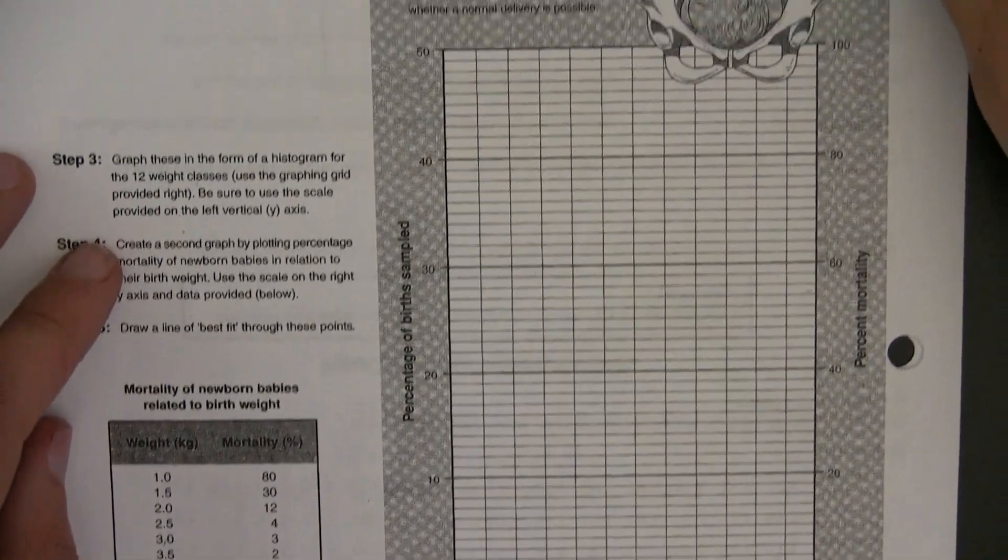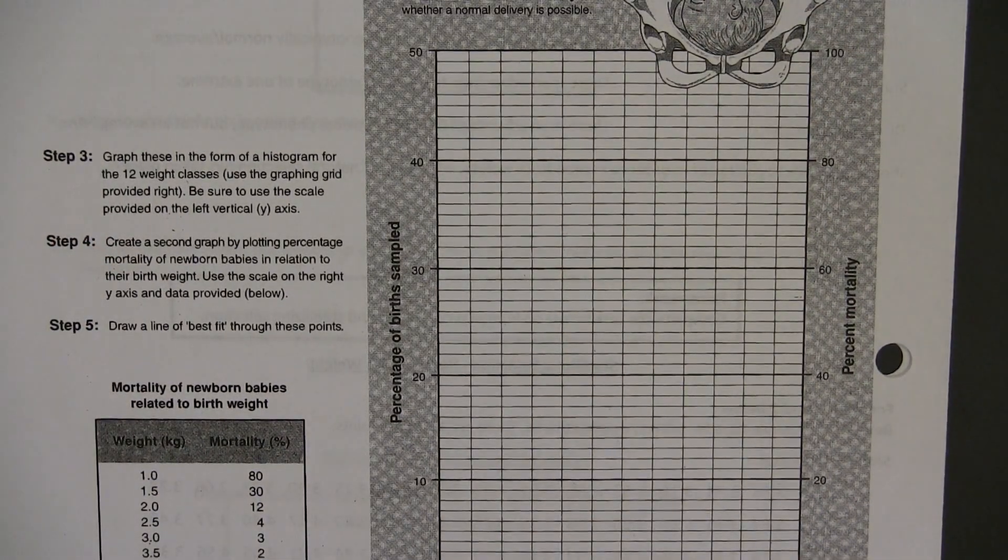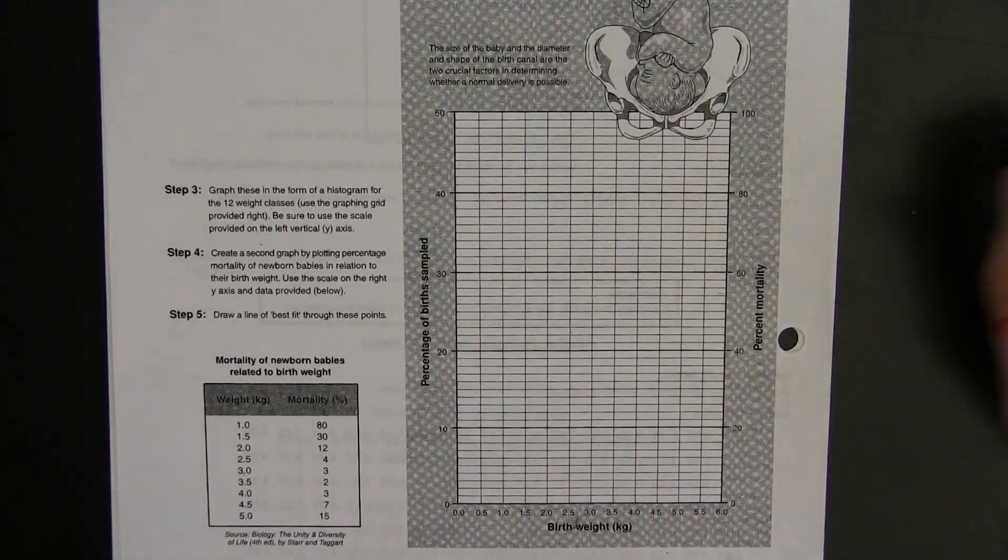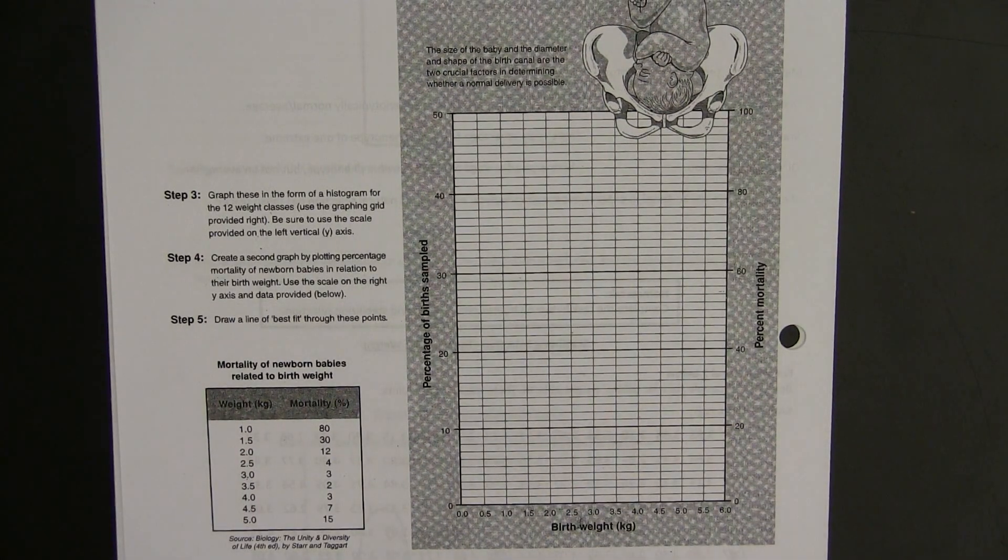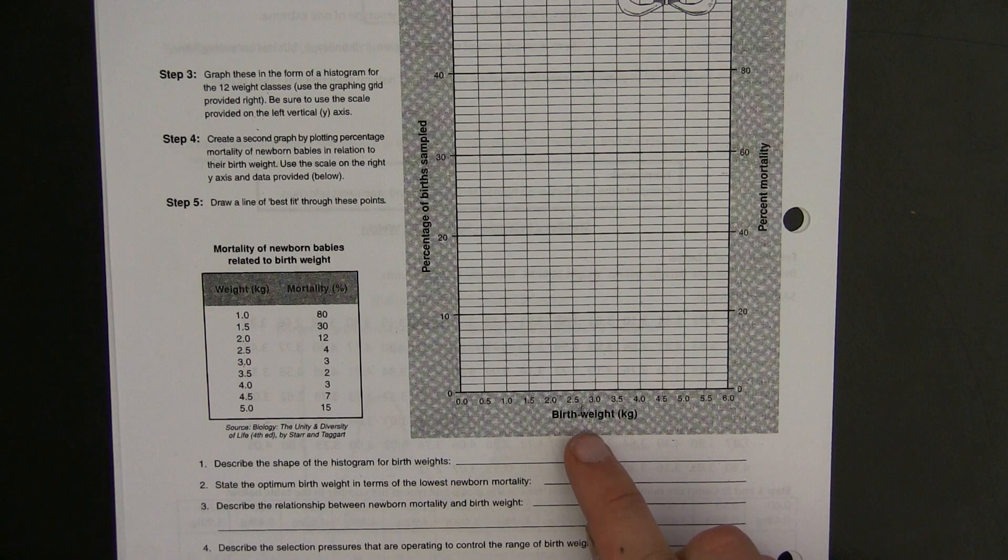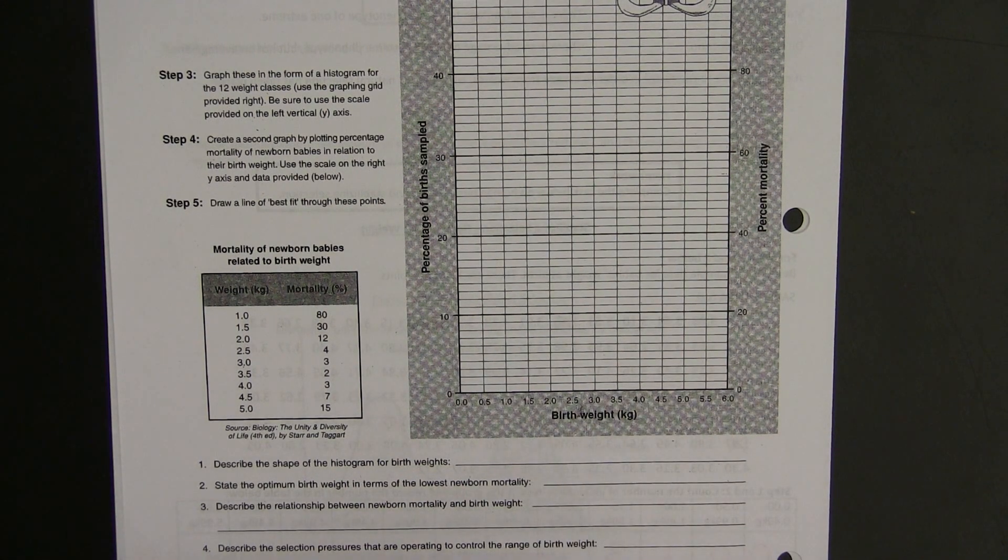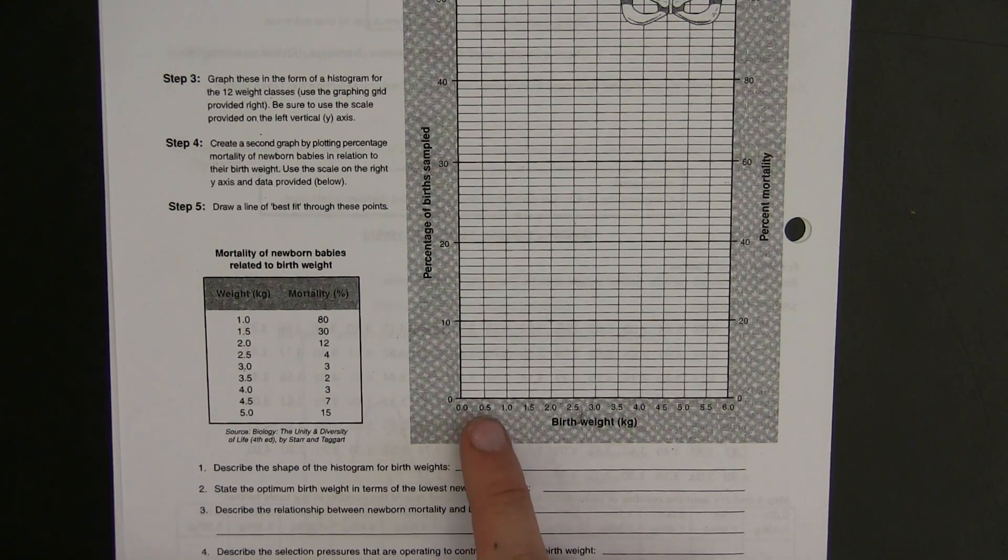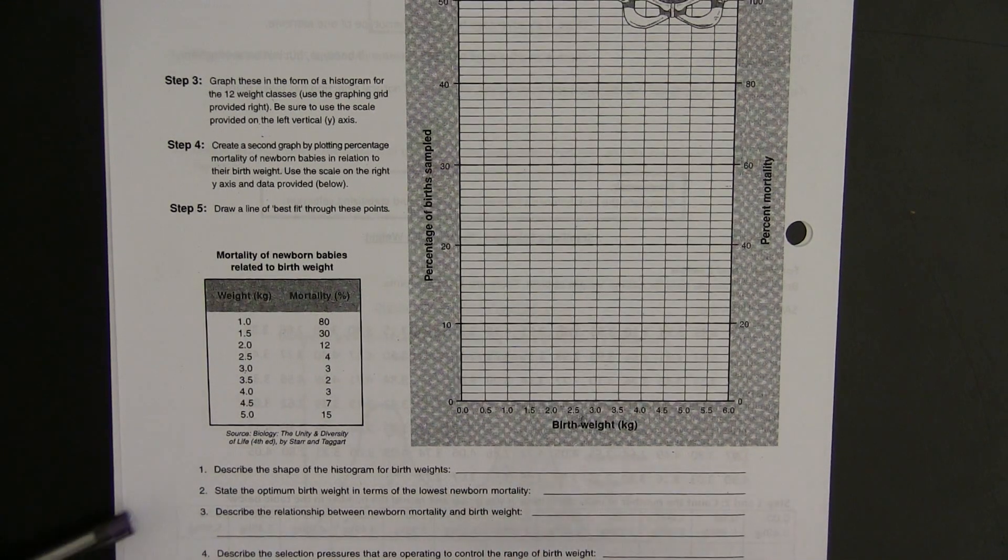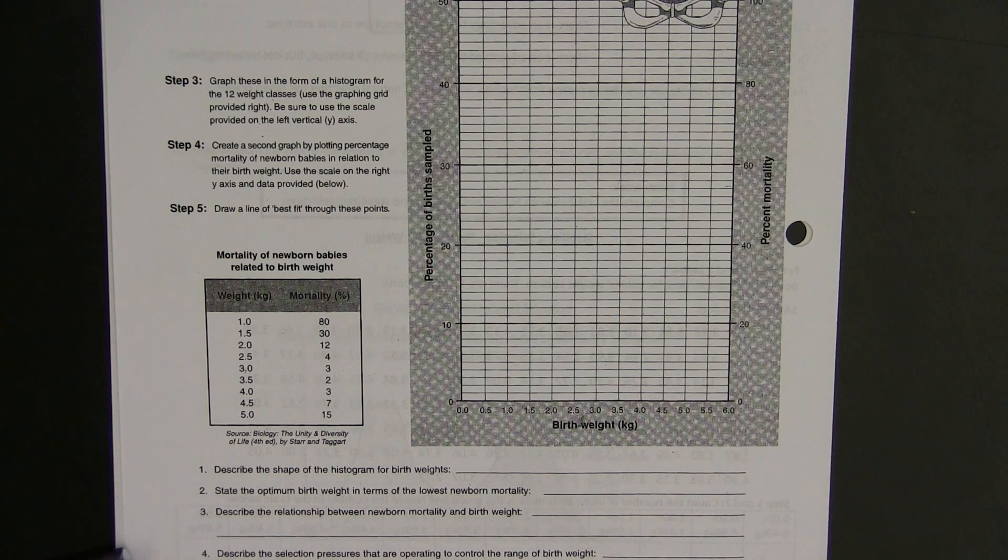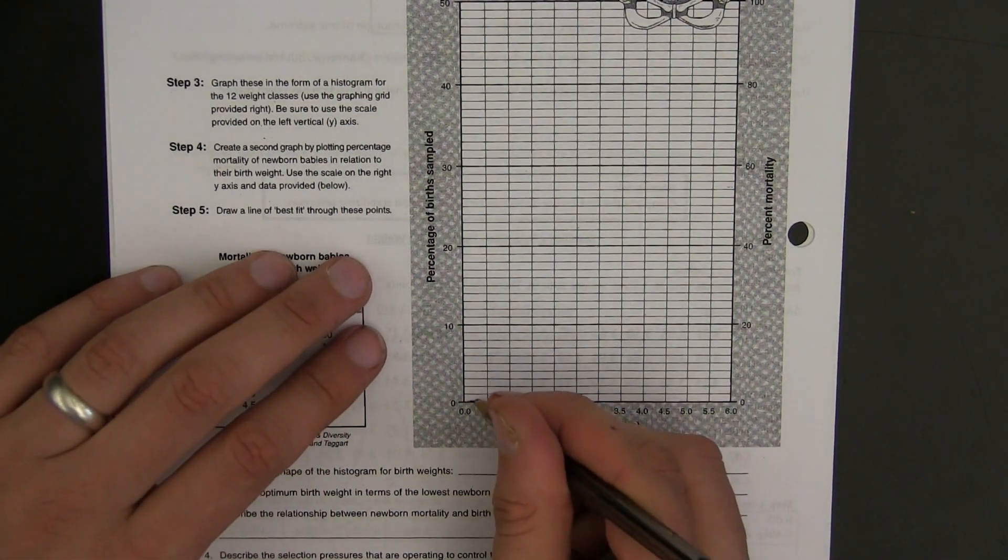So turn over to this part of the class packet here. Let me just zoom out so you can see the whole thing. And we've got space for plotting this data. So at the bottom, we've got the baby's birth weight. And for the first two weight categories, 0 to 0.5 and 0.5 to 1, there were no babies born at that mass. So we can just leave it at 0 along the base here.